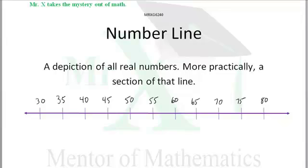It's a depiction of all real numbers. You know that if we go to the left infinitely far, we end up at negative infinity. And if we go to the right infinitely far, we go to positive infinity. And so nobody's ever drawn a complete number line. That would be impossible.